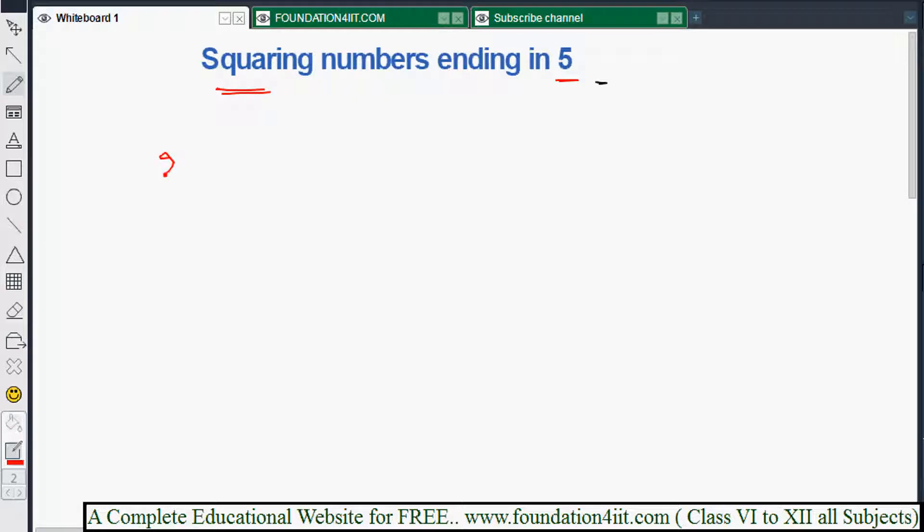For example, 25 square, 35 square ending with 5, 65 square, numbers like this, or 95 square. Even you can take 3 digit, 4 digit numbers also. So you can take 105 square like this. How to do these answers in seconds?